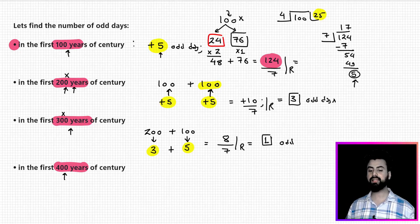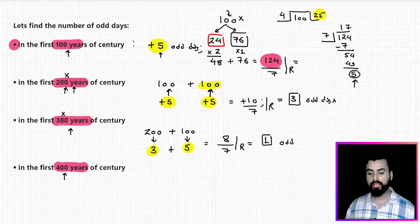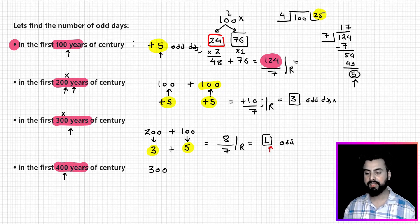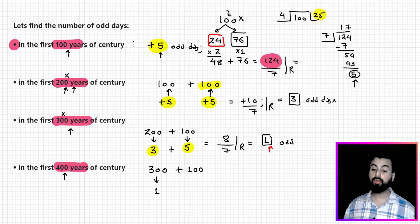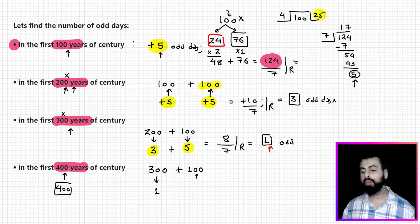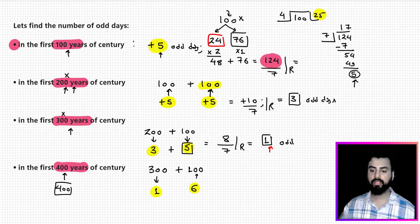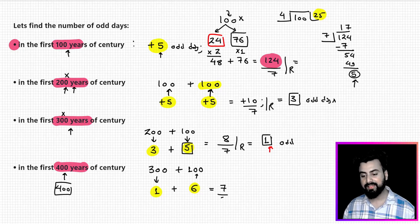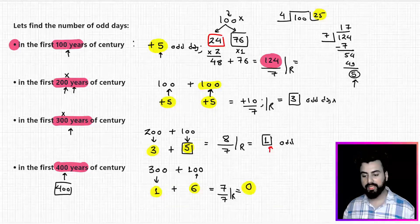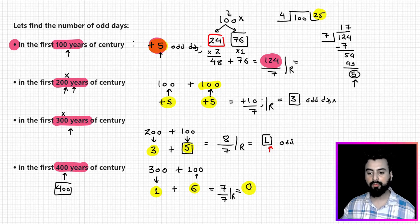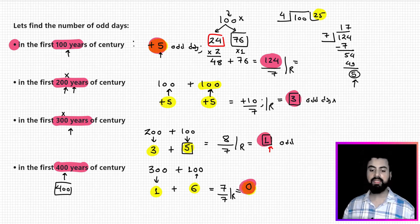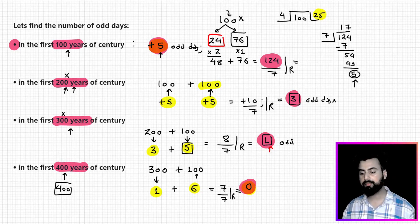For the first 400 years, we know the first 300 years give 1 odd day. For the last 100 years of this period, the 400th year is considered a leap year, so the odd days are 5 plus 1 extra equals 6. Adding: 1 plus 6 equals 7, and 7 divided by 7 gives a remainder of 0. So in the first 400 years, the number of odd days is 0. Remember these values: 100 years → 5, 200 years → 3, 300 years → 1, 400 years → 0.